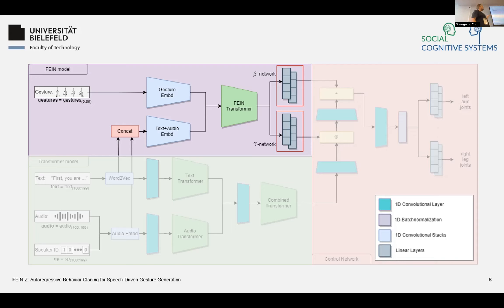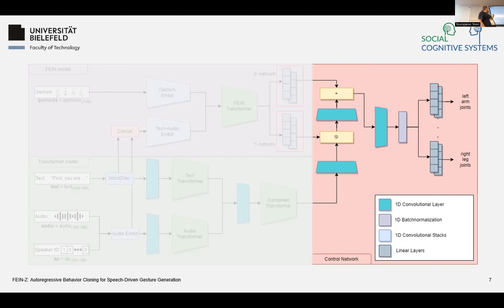The FAIN model — Feature Extraction Infusion Network — learns an embedding from the text and audio embeddings as well as the gesture embeddings, and calculates beta and gamma networks which are used in the control network. It basically extracts all important features and infuses them at the end. The control network gets the transformer information, multiplies it with the gamma network to scale the data, and with the beta network adds granular information back in — this is called FiLM, Feature-wise Linear Modulation.